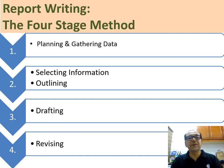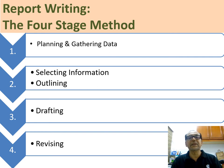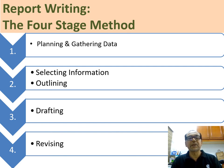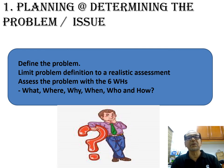Report writing has four stages. The first stage is planning and gathering: you plan using the template — introduction, body including analysis, recommendation, and conclusion — then gather information and data. You can gather it through surveys, from books, articles, or other people's reports. Then you select the information, do the outlining of your report, write the draft first, and then revise the report. That is the planning process for the report.